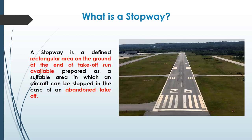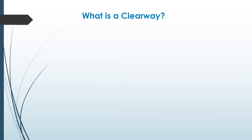The next is the stopway. A stopway is a defined rectangular area on the ground, present at the end of takeoff run available, and it is prepared as a suitable area in which an aircraft can be stopped in case of an abandoned takeoff. This abandoned takeoff can be because of various reasons like technical failure, engine failure, fire, or various environmental conditions. So basically, at the end of the takeoff run available for a runway, if there is a rectangular area provided which will cater to an abandoned takeoff, then that rectangular area on ground is called the stopway.